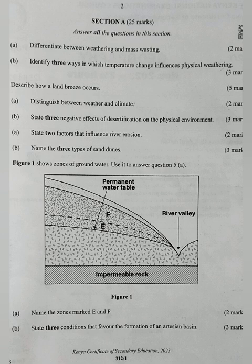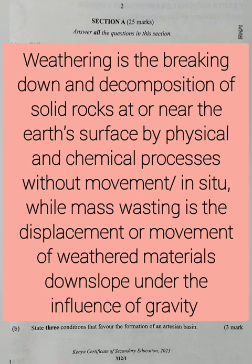Here we are differentiating, and the keyword is 'while'. If you don't use the word 'while', you are lost. Weathering is the breaking down and decomposition of solid rocks at or near the earth's surface by physical and chemical processes without movement, or in situ, while mass wasting is the displacement or movement of weathered materials downslope under the influence of gravity. The word 'while' is very important.